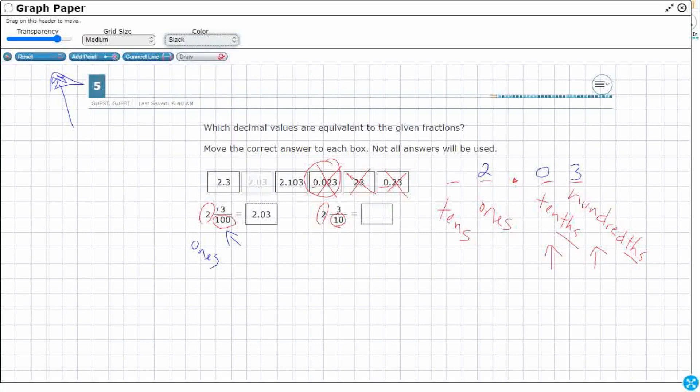So this is two. So I'm going to keep this two right here. But it's got three tenths. So here's my tenths spot right here. So I just need two point three. I don't need anything over here.